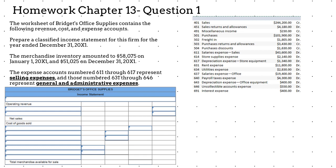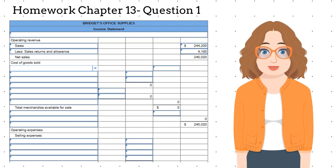So, looking at the list of accounts, the list starts off with sales for $244,200 and sales returns for $4,180. Those are the first two accounts we need to enter on our income statement. Sales $244,200 minus sales returns and allowances of $4,180 equal net sales $240,020.